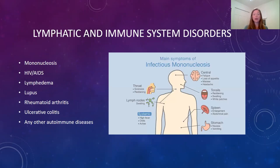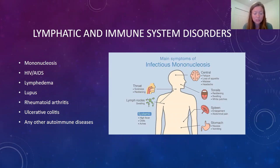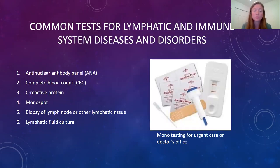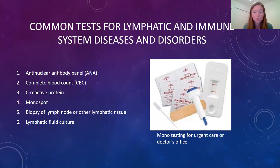Some common disorders of the lymphatic and immune systems include mononucleosis or mono, HIV or AIDS, allergies, lymphedema, rheumatoid arthritis, ulcerative colitis, and different autoimmune diseases. Several tests help diagnose diseases and disorders in the lymphatic and immune system, found on table 5-4, pages 95 through 96 in your textbook. These might help diagnose things such as rheumatoid arthritis, lupus, mono, tuberculosis, or certain cancers.